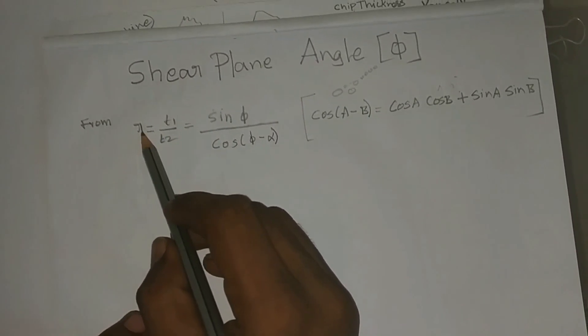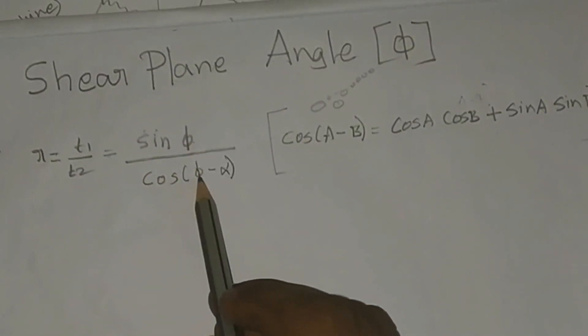From the chip thickness ratio r formula: r = sin φ / cos(φ - α).